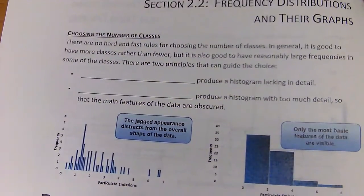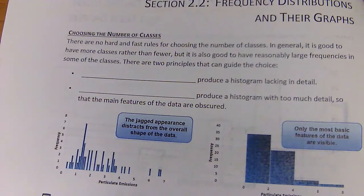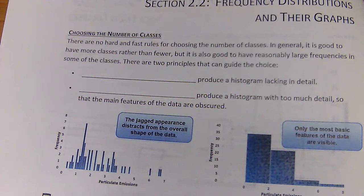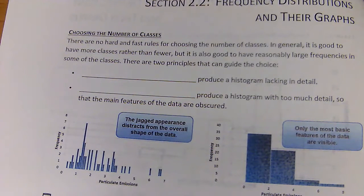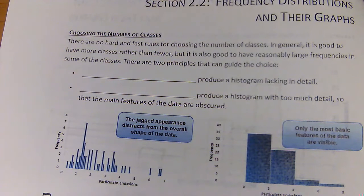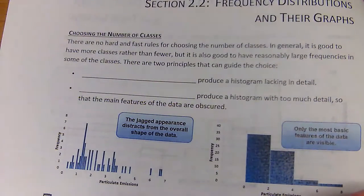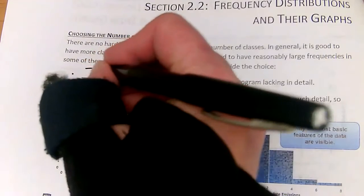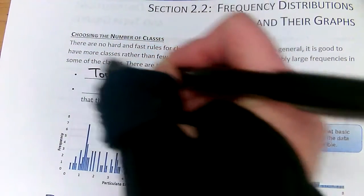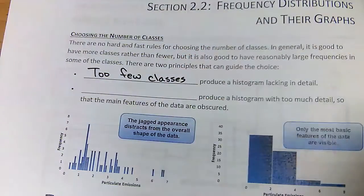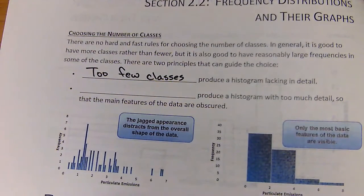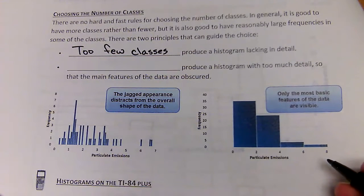Now sometimes we need to decide how many classes we need to make. There are no hard and fast rules for choosing the number of classes. In general, it is good to have more classes rather than few, but it is also good to have reasonably large frequencies in some of the classes. There are two principles that can guide the choice.